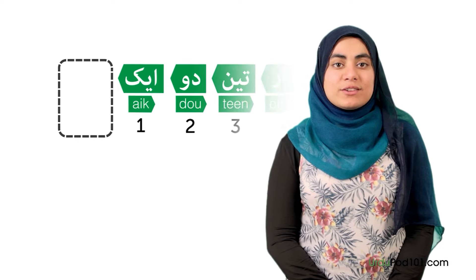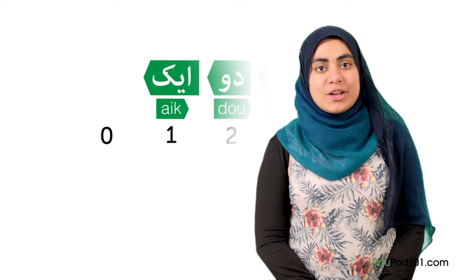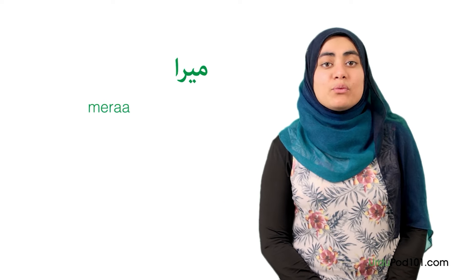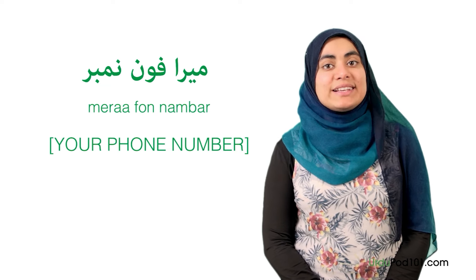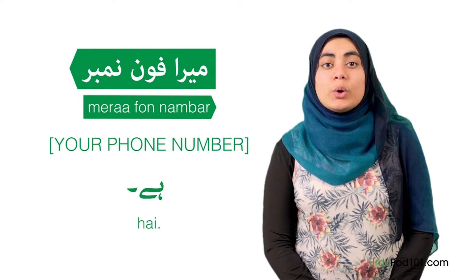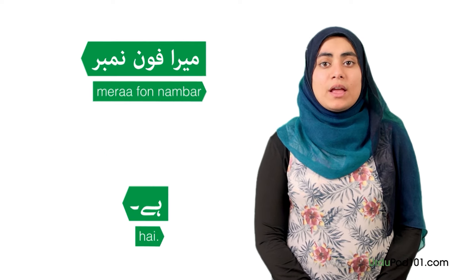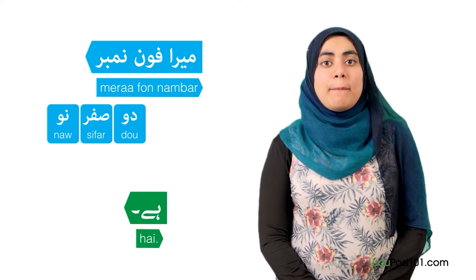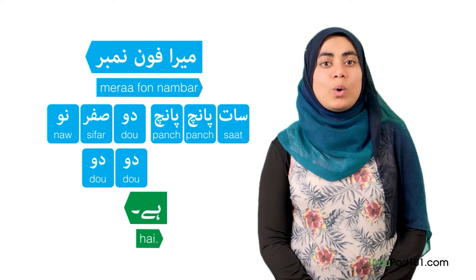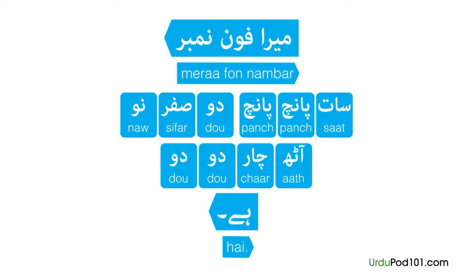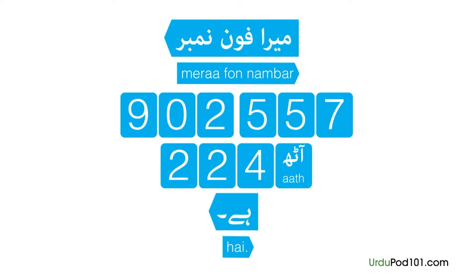Great job! What is before ek? It's zero — which in Urdu is sifar. Now you don't have any more excuses — you can give your friends your cell phone number in Urdu. To say 'my phone number is,' say: Meera phone number, then your number, then hai. For example: Meera phone number no sifar do paanch paanch saat do do chaar aat hai.